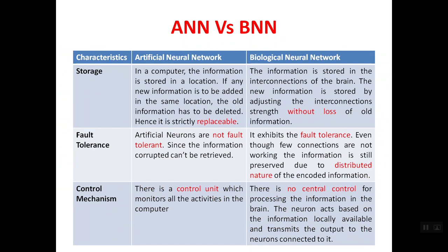Regarding fault tolerance, artificial neural networks are not at all fault tolerant — if information is corrupted, it is corrupted only and cannot be recovered. But biological neural networks exhibit fault tolerance. Even though a few connections are lost among the 10 to the power of 15 connections, because of the massive distributed parallel operations, processing can still be performed. Biological neural networks are definitely fault tolerant, whereas artificial neural networks are not.